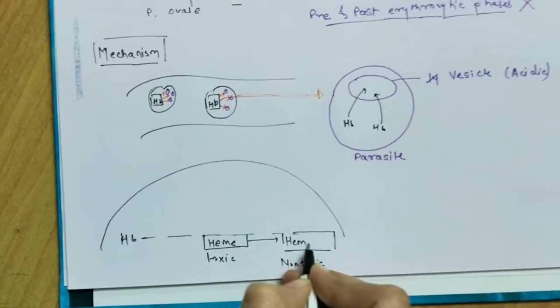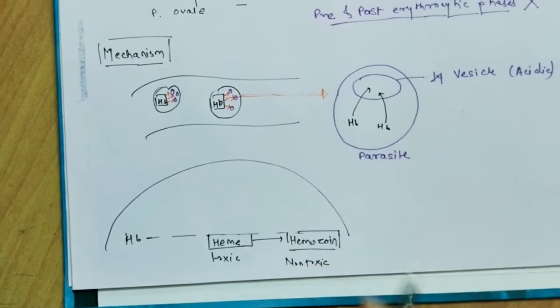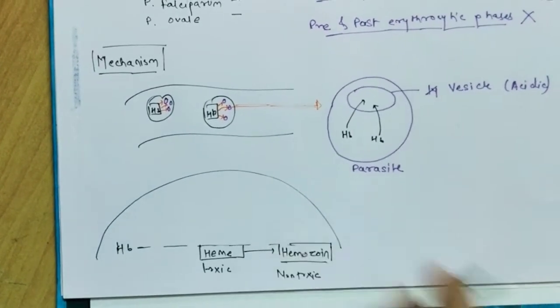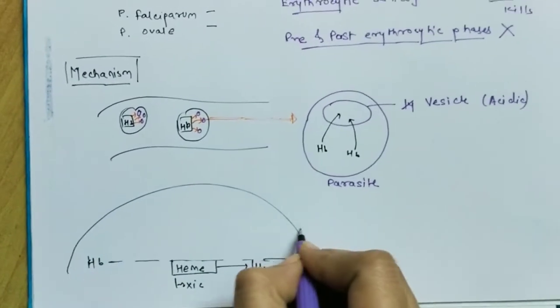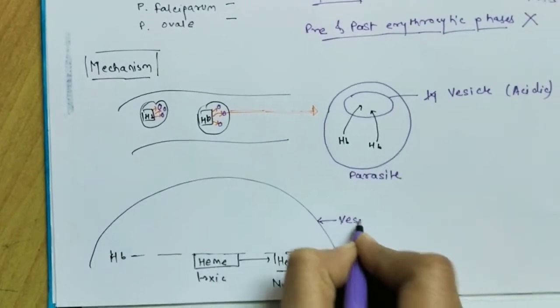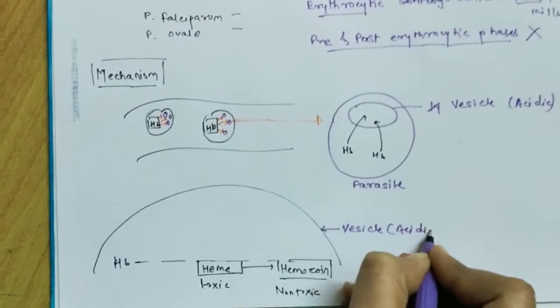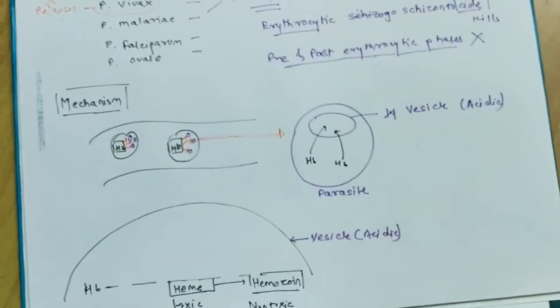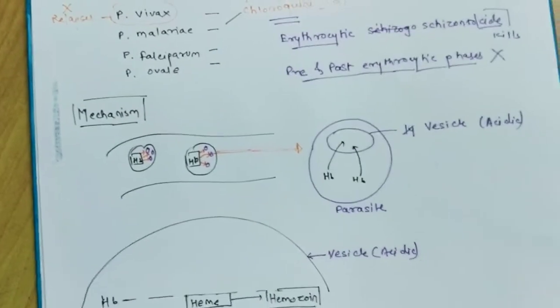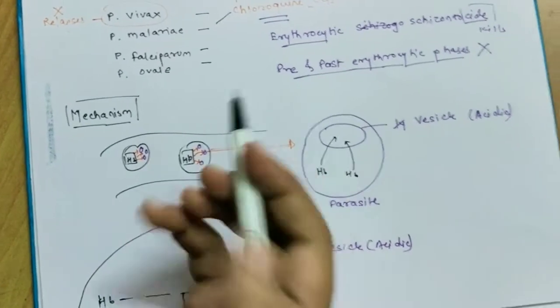So let me write here hemozoin, and here the name of the vesicle - acid vesicle which is acidic. Yeah, so the conversion is really required for the plasmodium to survive because heme is really toxic.